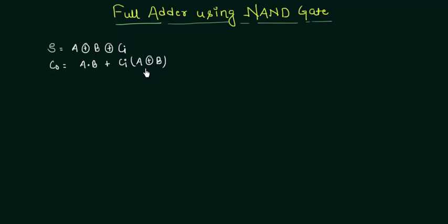This is something we have discussed already in the full adder explanation. You may already know that the XOR operation, or the XOR gate, is implemented by using 4 NAND gates. We discussed this in the half adder implementation of the NAND gate and also while discussing universal gates.